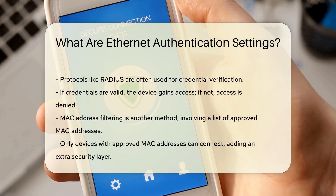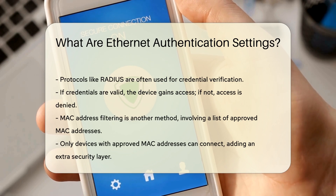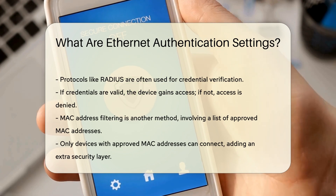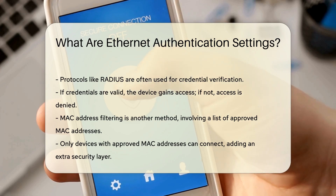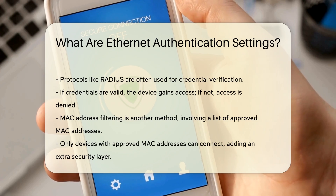If the credentials are valid, the device gains access. If not, access is denied. Another aspect of Ethernet authentication is MAC address filtering. This method involves creating a list of approved MAC addresses — only devices with these addresses can connect. While not foolproof, it adds an extra layer of security.